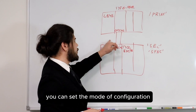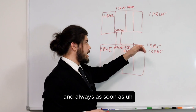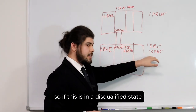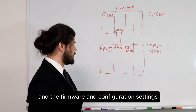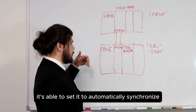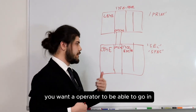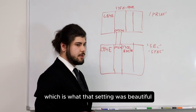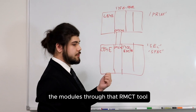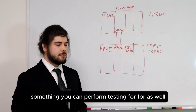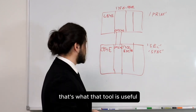The RMCT handles things like setting the mode of configuration such that it synchronizes automatically as soon as the connection is made. So if the system is in a disqualified state but is able to synchronize through checking hardware, firmware, and configuration settings, it can be set to automatically synchronize. That's useful if it's a remote site and something becomes disconnected — an operator can fix the issue and have it automatically synchronize. You've also got a 'never' setting for auto-synchronization, and you can manually synchronize the modules through the RMCT tool, which you can also use to initiate a switchover, qualify, or disqualify.